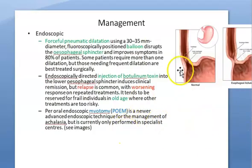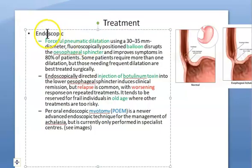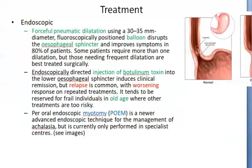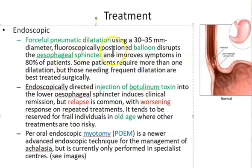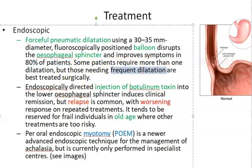Treatment — first, the endoscopic methods. One is using a balloon: forceful pneumatic dilatation of the lower esophageal sphincter. Pneumatic means air. You put in an endoscope, send a balloon, and dilate the lower esophageal sphincter. This will help most patients, though some may need another sitting. If more and more frequent dilatations are required, you have to use other methods.